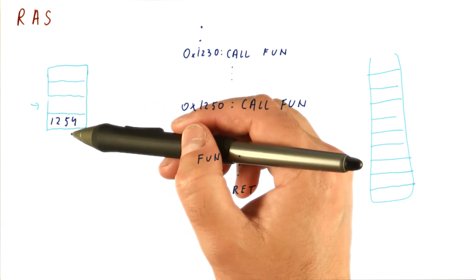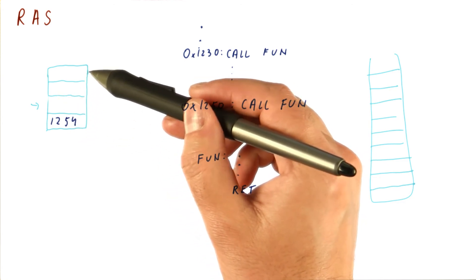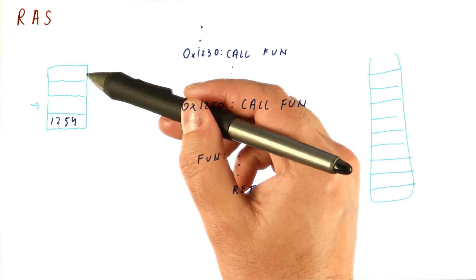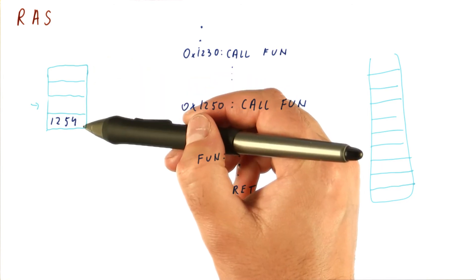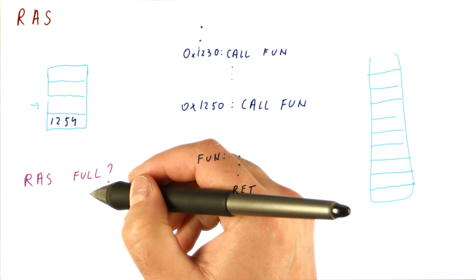So what happens when we exceed the size of the RAS? Let's say we have only four entries. Let's say that we call a function, we call another one, we call another one, we call another one. Now the question is, what do we do if our RAS is full?